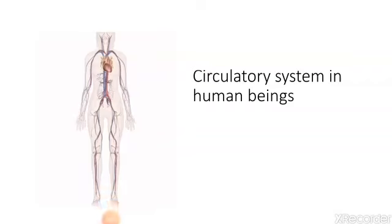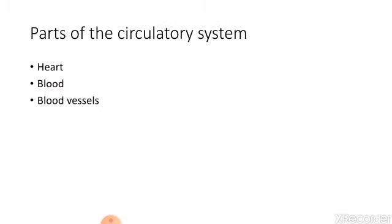Our circulatory system includes heart, blood and blood vessels. Today we will focus on the heart part. See parts of circulatory system: heart, blood and blood vessels.